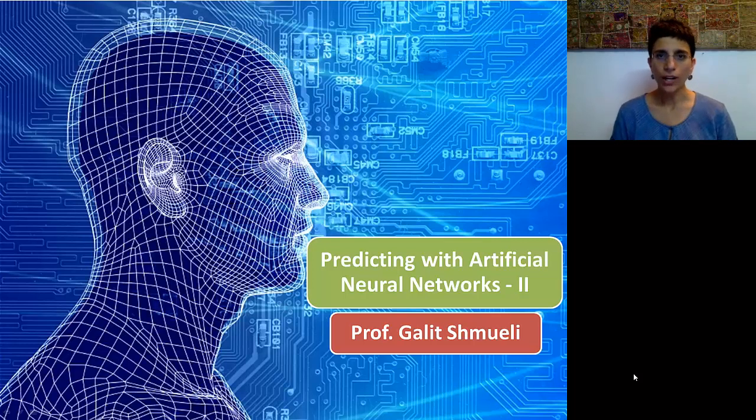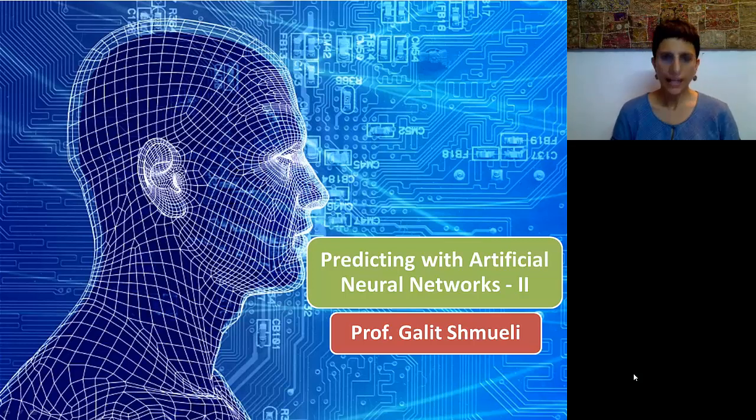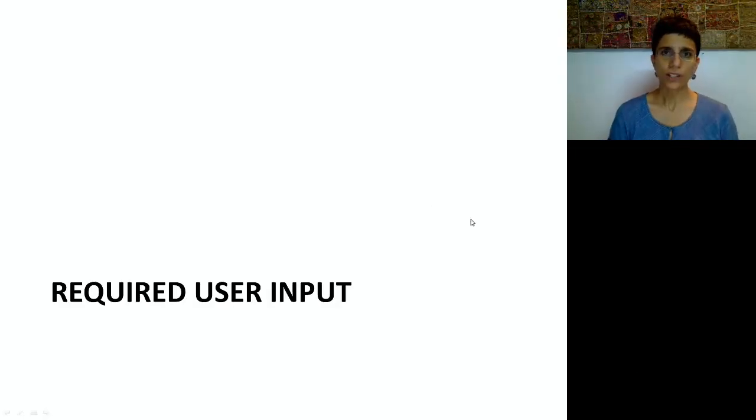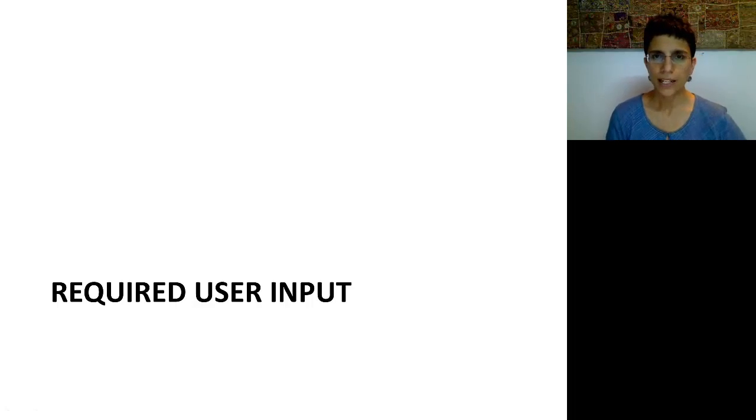In this second part, we're going to look at the user point of view. In particular, we're going to look at what is needed in terms of the inputs that the user has to supply in order to train and deploy a neural net.